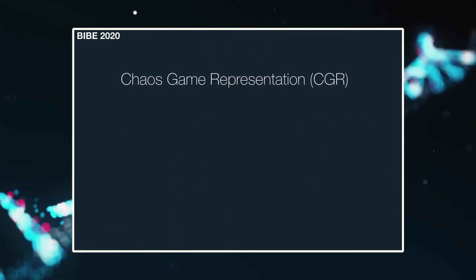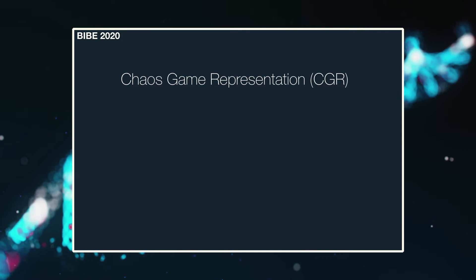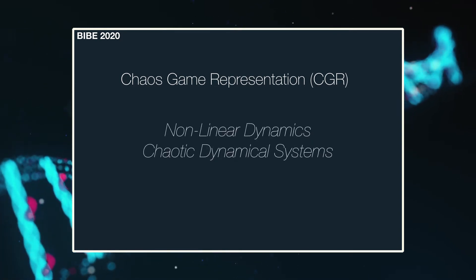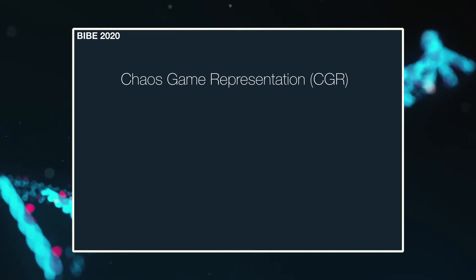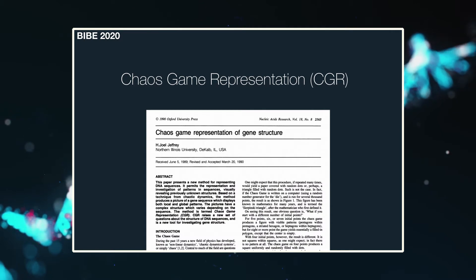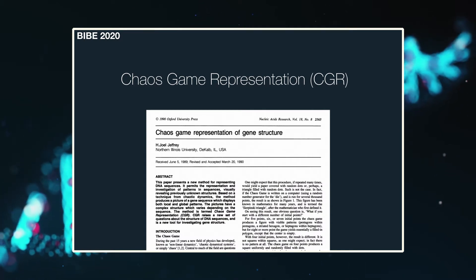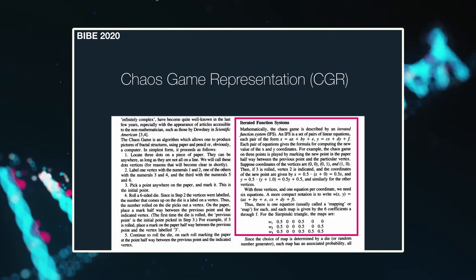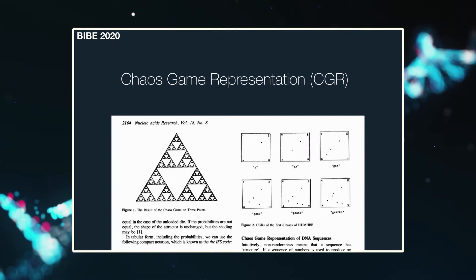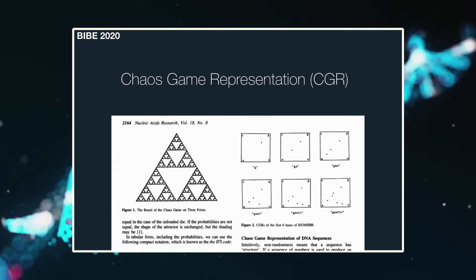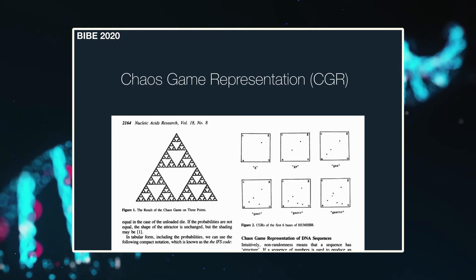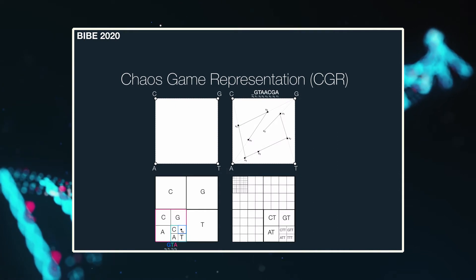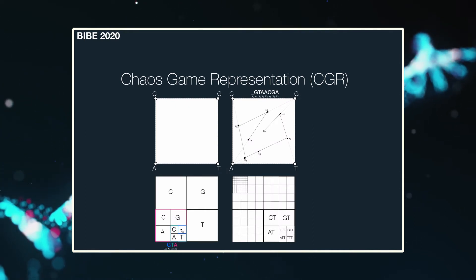What exactly is Chaos Game Representation, or CGR? Through the 1980s, the field of physics known as Non-Linear Dynamics, Chaotic Dynamical Systems, or chaos, garnered much interest, and in 1990 Dr. H. Joel Jeffrey proposed the use of CGR to visually depict gene structure. Specifically, the Chaos Game is an iterated function system that allows the visual representation of the fractal structure of a sequence of possibly infinite length. That is, a one-dimensional sequence of arbitrary length is encoded into a two-dimensional CGR, where each point in CGR space encodes both local and global sequence information.